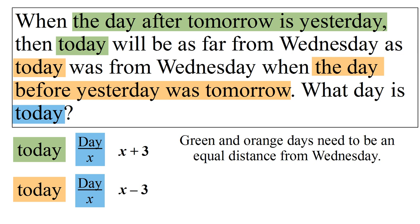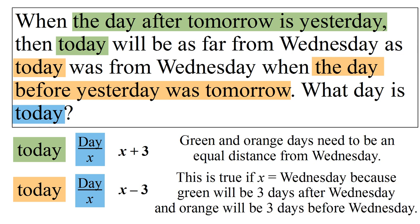When does this happen? It exactly happens when x is equal to Wednesday because that means green will be three days after Wednesday and orange will be three days before Wednesday. Therefore, today is Wednesday.